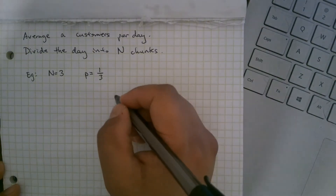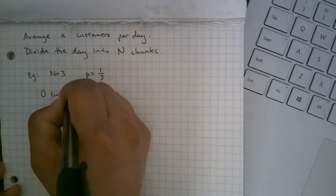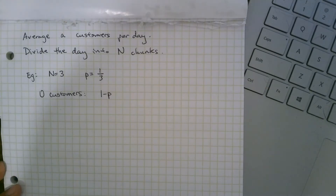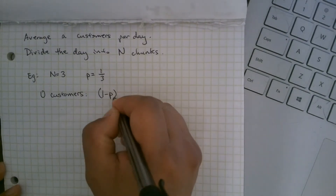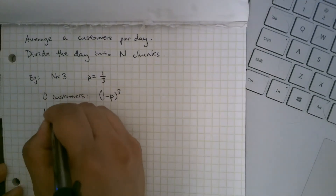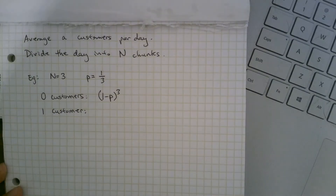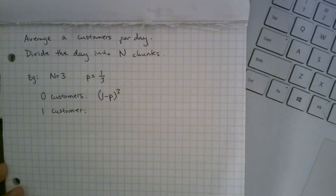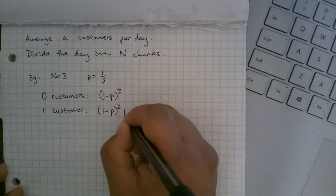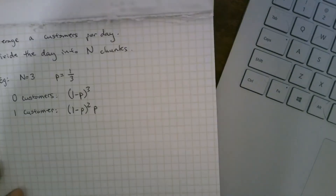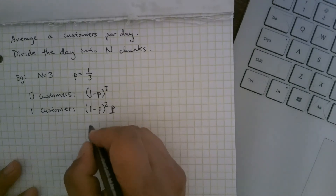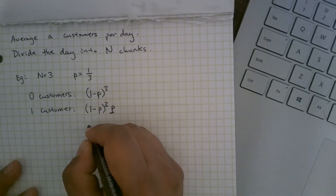Let's do a little example where n equals 3. The probability of having a customer in each chunk is a/n — so if a equals 1, it's one-third. The probability of zero customers: probability of no customer in a chunk is (1 - p), and since the chunks are independent, the probability of zero customers all day is (1 - p)³. For one customer, you have two chunks with no customers and one chunk with a customer, and that customer chunk could be any of the three chunks.